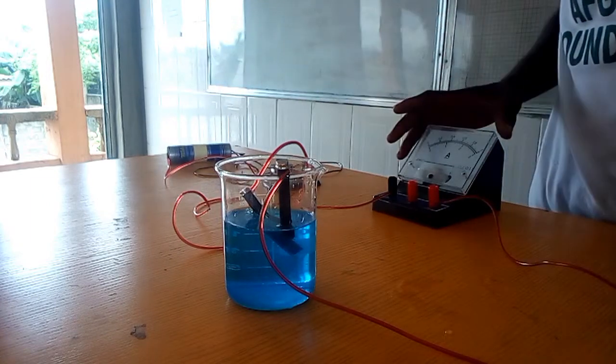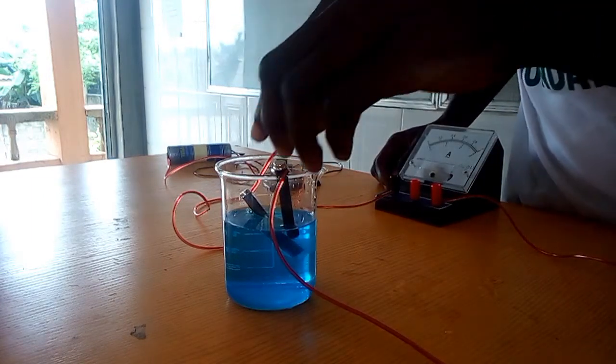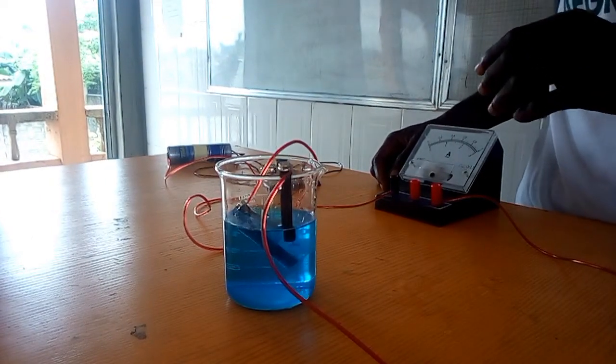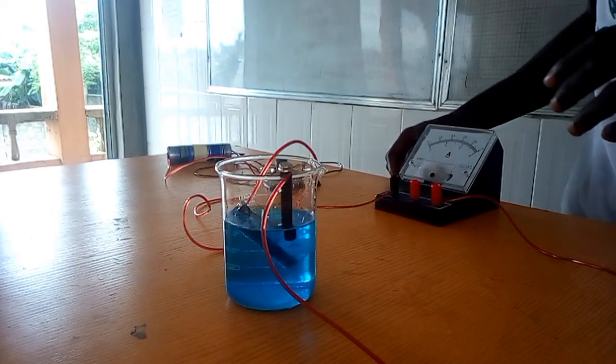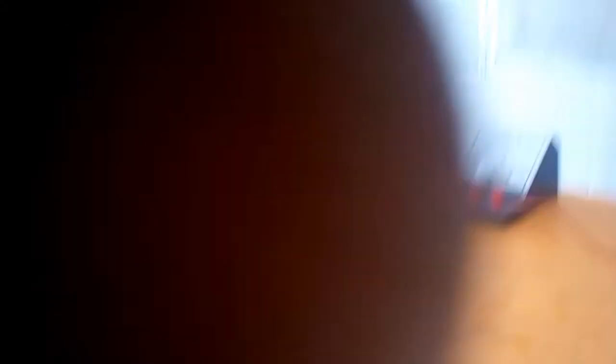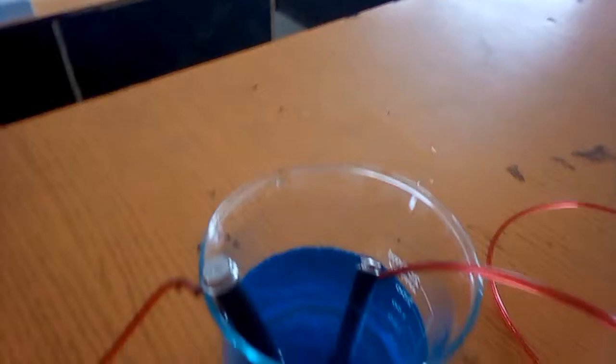There is formation of copper at the cathode and formation of oxygen gas at the anode. So let's take it around. You see the bubble of oxygen gas around the anode and you see a change in color of the cathode. Look at the process, look at the arrangement.